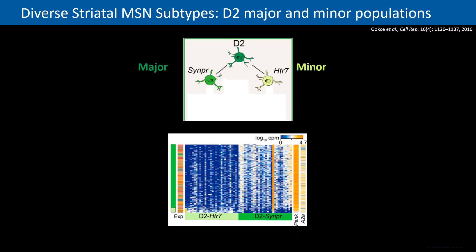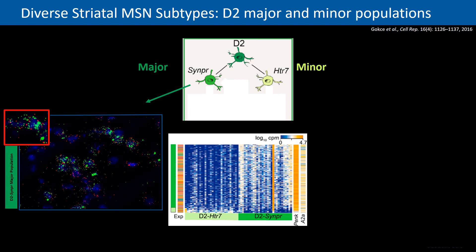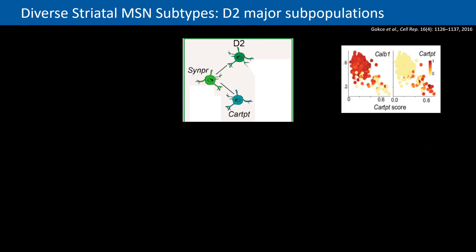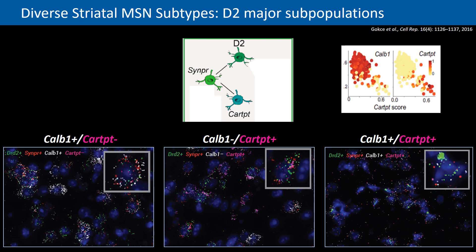On the other side of the axis were the D2 major and minor populations. D2 major was marked by SINPR, and the D2 minor population by HTR7. We confirmed more cells expressing the major marker SINPR, and while some HTR7/DRD2 co-expressing cells were detected, they were definitely fewer in number — matching the single-cell RNA sequencing data. Similarly, the D2 major population also had a subpopulation marked by expression of either COB1 or CART-PT. While some cells expressed either marker, a few expressed both, depicted as very nice colocalization of three or all four markers together in the same cell.